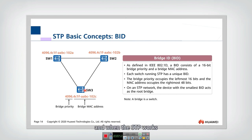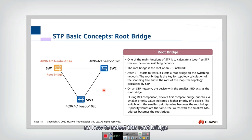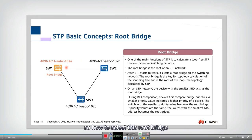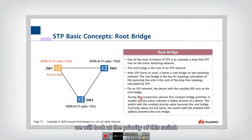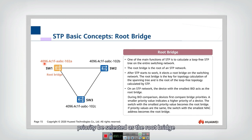When STP works, we need to select one root bridge among all the switches. How do we select the root bridge? We follow rules. First, we look at the priority of each switch. A switch with a lower priority value has higher priority and will be selected as the root bridge.